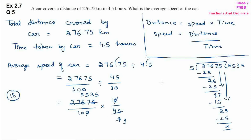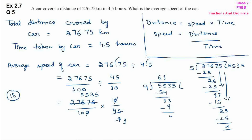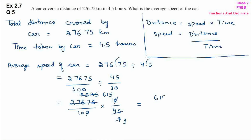Dividing 5535 by 9: 9 ones are 9, remainder 0; bring down 5 → 55, 9 sixes are 54, remainder 1; bring down 3 → 13, 9 ones are 9, remainder 4; bring down 5 → 45, 9 fives are 45. So 5535 ÷ 9 = 615. The result is 615/10.